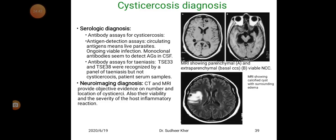Diagnosis includes serology: antibody assays for cysticercosis, and antigen detection assays. Circulating antigen indicates a live parasite in an ongoing viable infection. Monoclonal antibody can detect antigens in cerebrospinal fluid. Antibody assays TSE-33 and TSE-38 are recognized by a panel for taeniasis but not cysticercosis. Neuroimaging using CT and MRI provides objective evidence on the number and location of cysticercosis, their viability, and the severity of the post-inflammatory reaction.